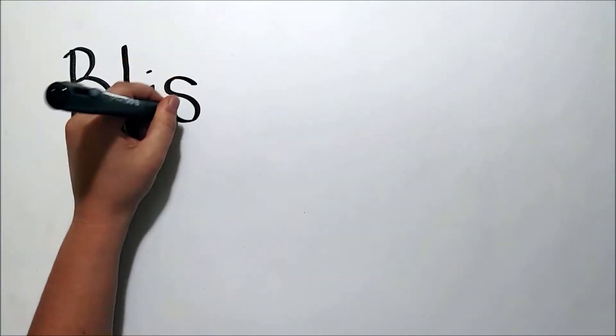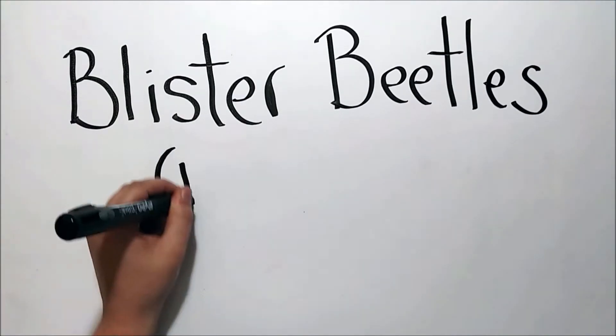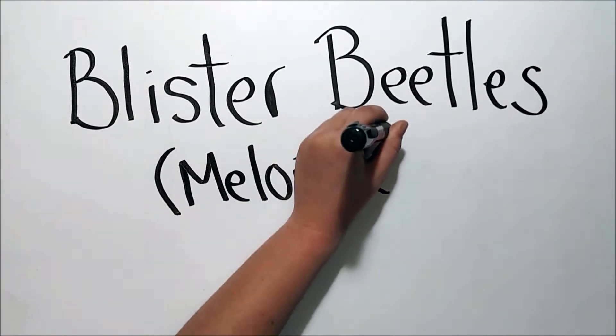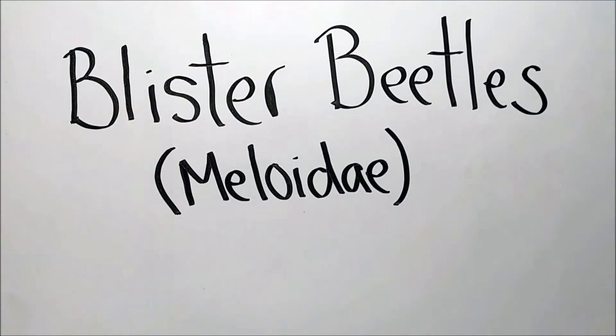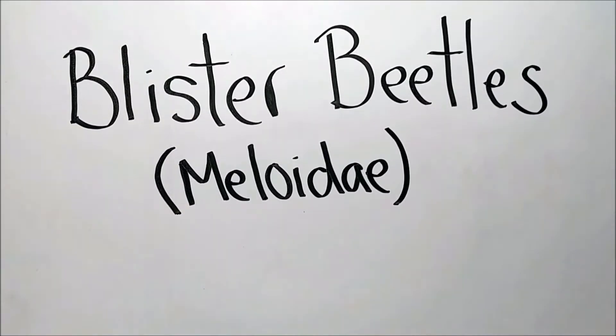These beetles are in the family Meloidae and are native to most countries around the world. The only two places that they cannot be found are New Zealand and Antarctica. Today we will be talking about their unique lifestyle and a toxic chemical that they can secrete from their exoskeleton.